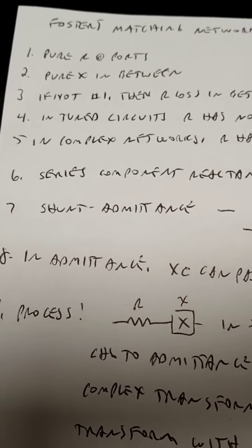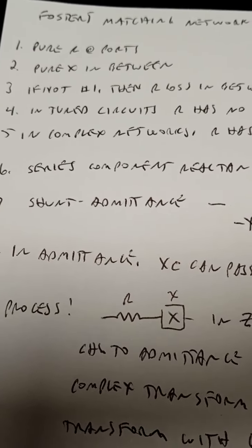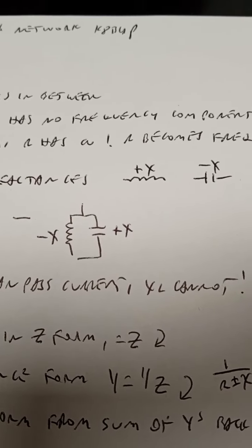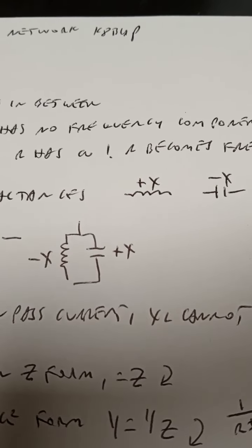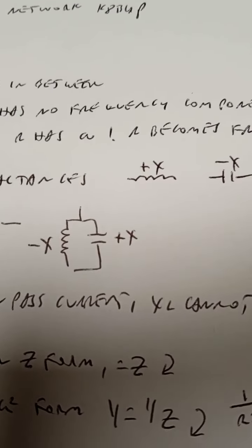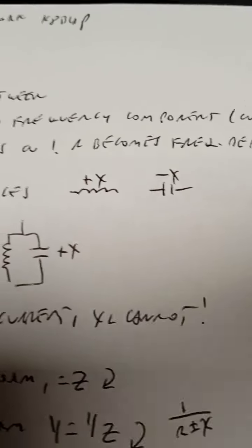In complex networks through these imaginary transforms, R takes on frequency. Strange stuff. And that's how the R value gets transformed. R becomes frequency dependent.